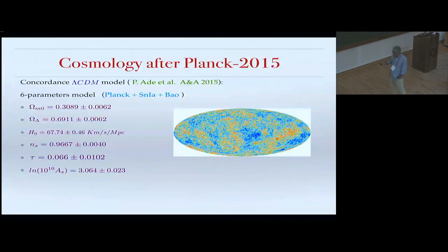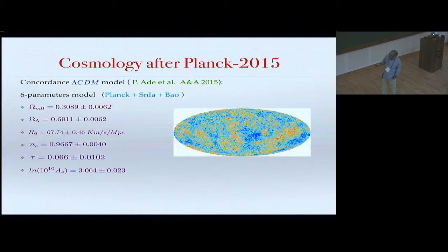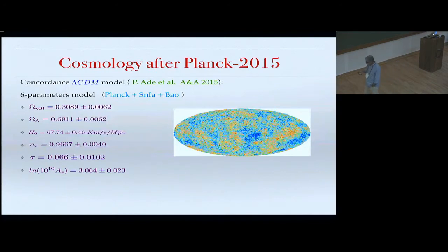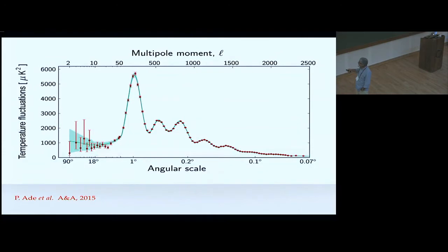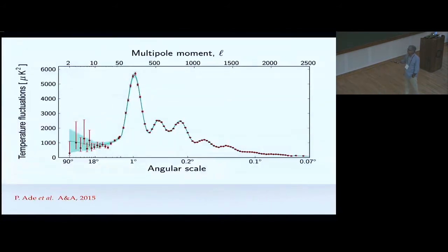After Planck 2015, the measurement of tiny fluctuations in the CMB shows the concordance Lambda CDM model — a six-parameter model — is amazingly consistent. The six parameters are: omega_M0, the cosmological constant density parameter, the Hubble parameter at present, the spectral index of primordial fluctuations from inflation, the optical depth for reionization tau, and the amplitude of the primordial fluctuation. With only these six parameters, one can fit the Planck data amazingly well.